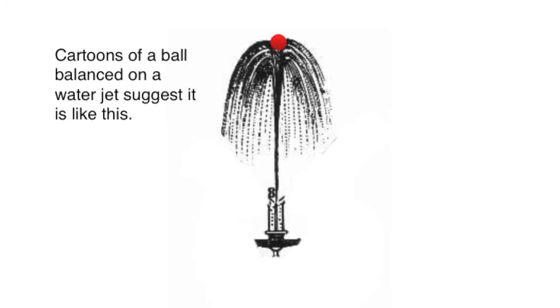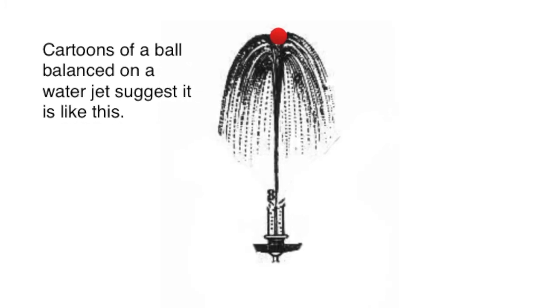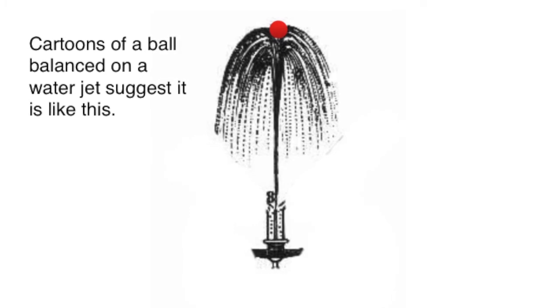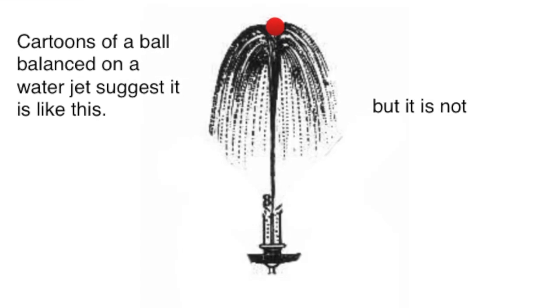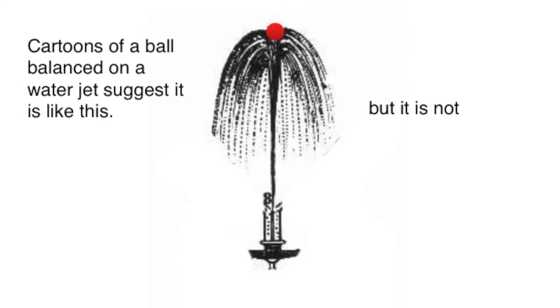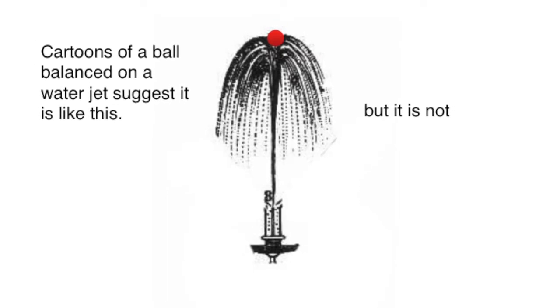Cartoons of a ball balancing on a water jet suggest it's like this, often offering the Bernoulli explanation that the pressure is lower in the centre because that is where the water is fastest. But it's not like that.